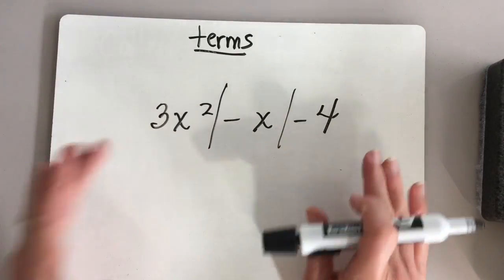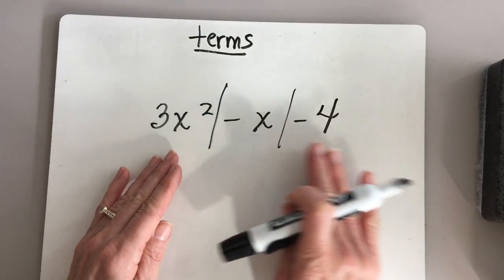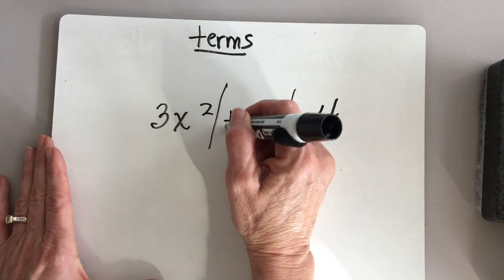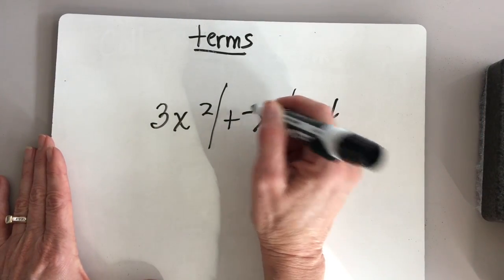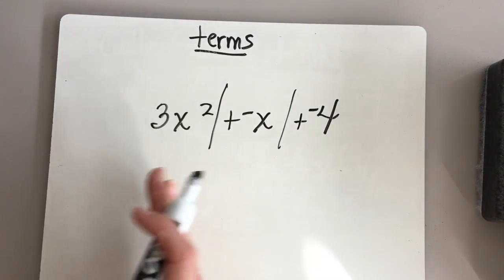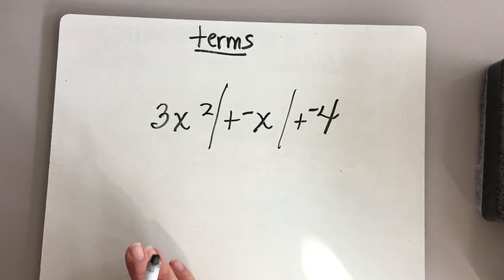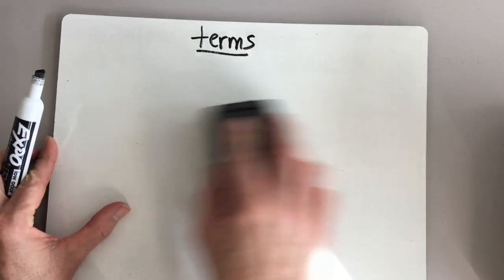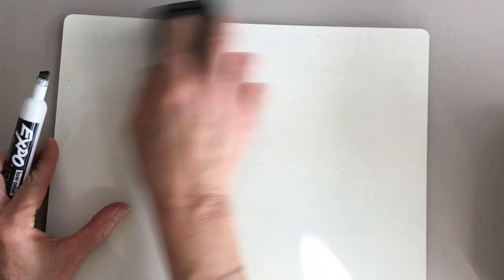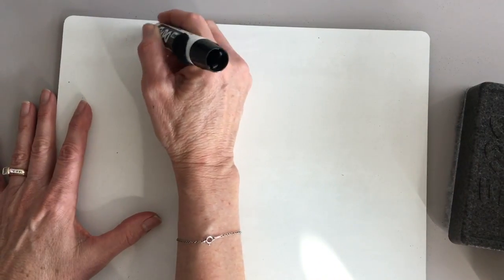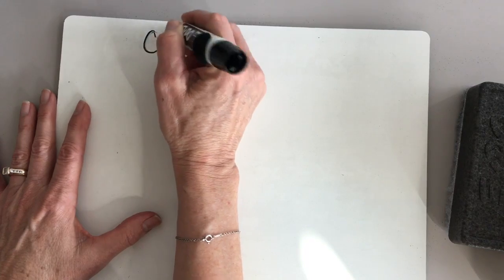As we've done in the past, anytime we've seen a subtraction sign, we've always changed it to addition and the next number to its opposite. You can do that or you can leave them the same — your option; I'm going to teach both ways. The next thing that we're going to do is collect like terms.